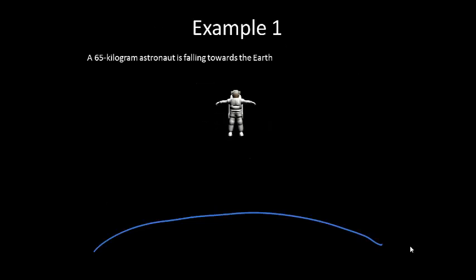So here's an example. I have a 65-kilogram astronaut that is falling towards Earth. Draw a free-body diagram for the astronaut. He has one force acting on him, the force of his weight, the force of the Earth pulling on him.